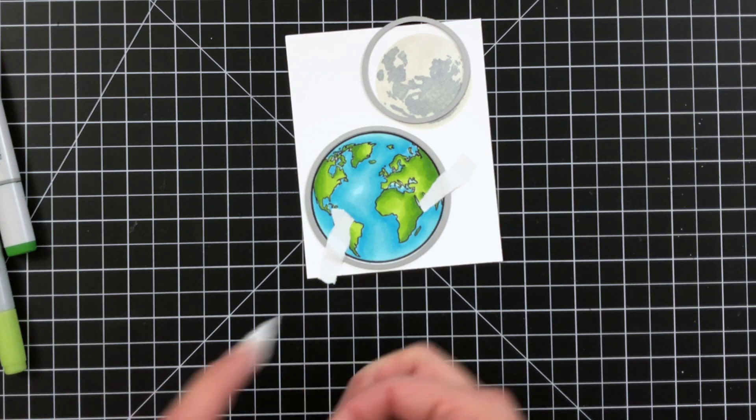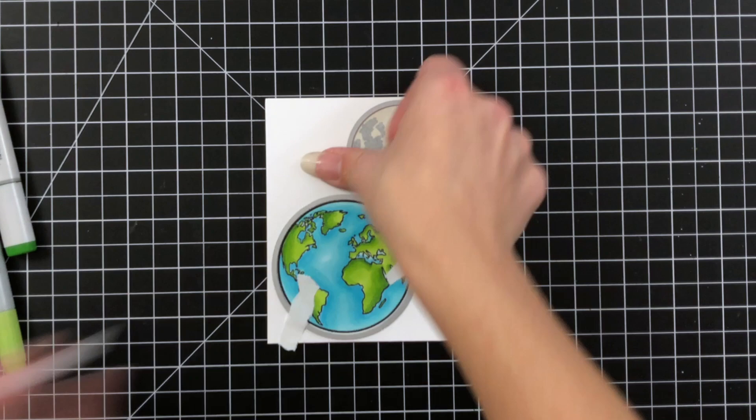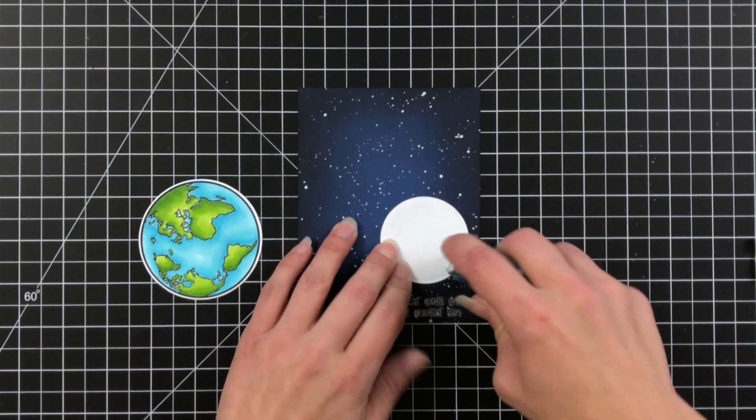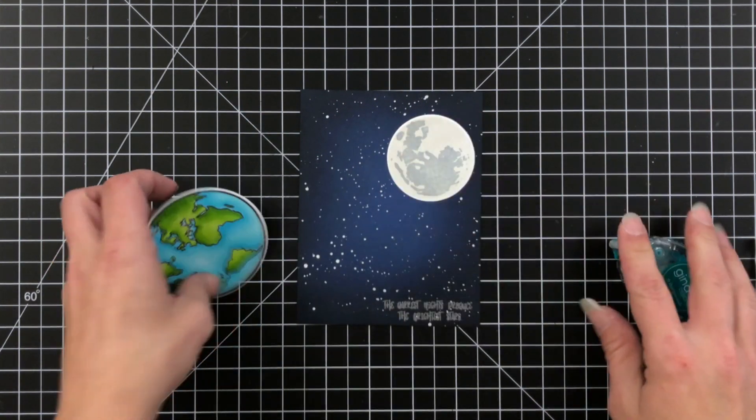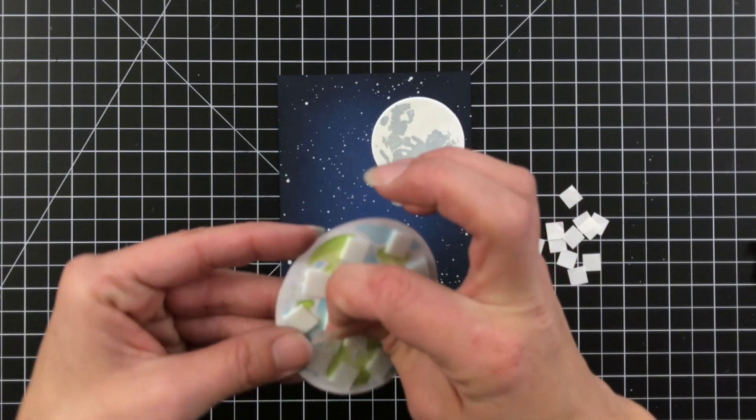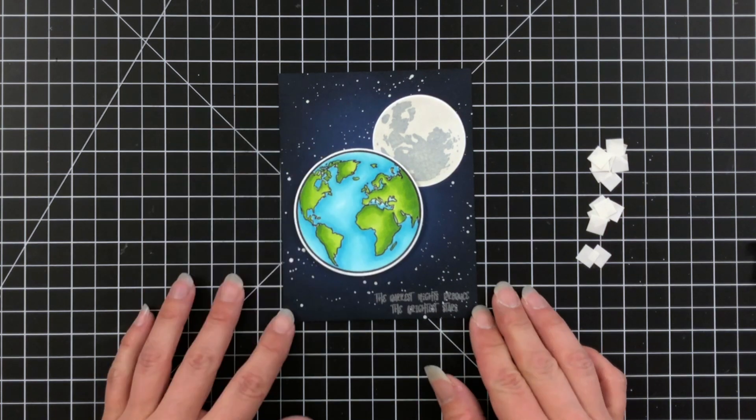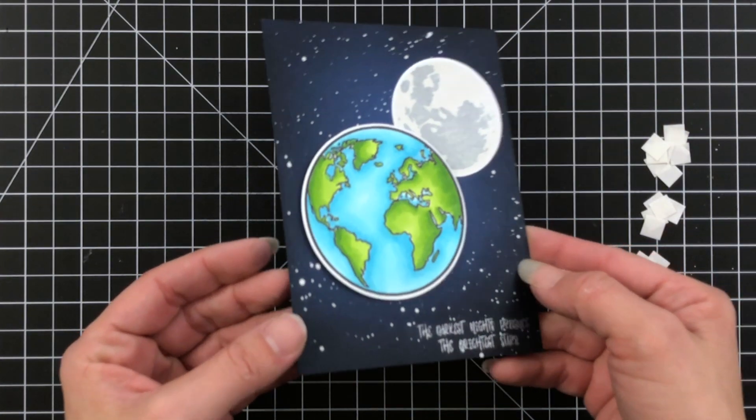Once that is colored, I'm just going to hold that in place with some post-it tape. I'm going to use the coordinating die to die cut these out. And the rest is super simple to put together. I am just using the Gina K adhesive to attach my moon up in the corner there. Then I'm going to put foam on the back of my earth and attach that right under the moon. I just love this complete scene and how easy it was to create this nighttime sky background.